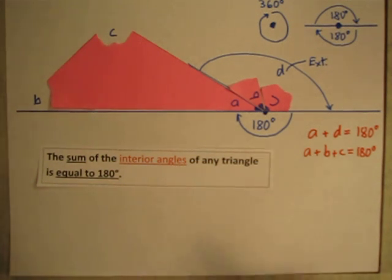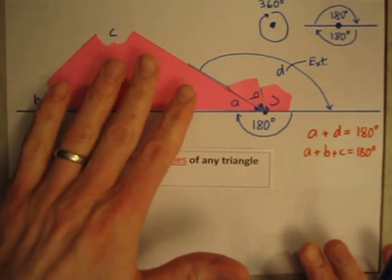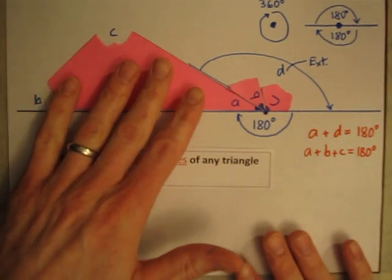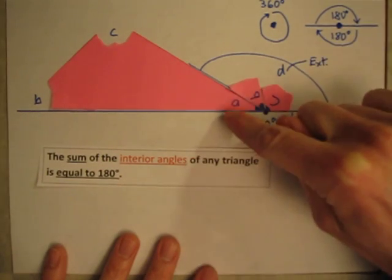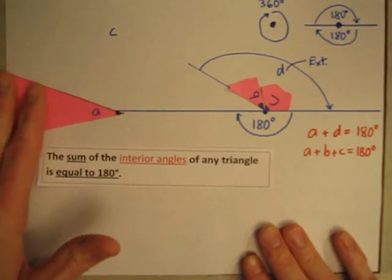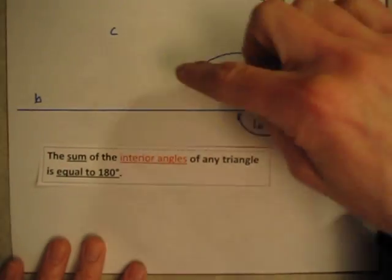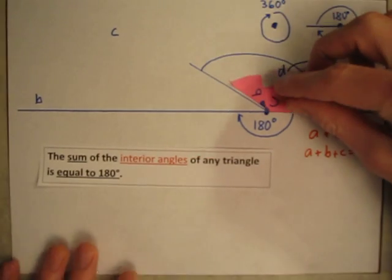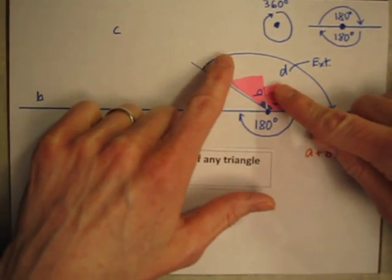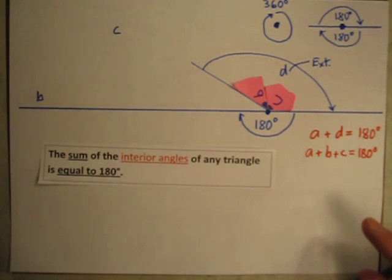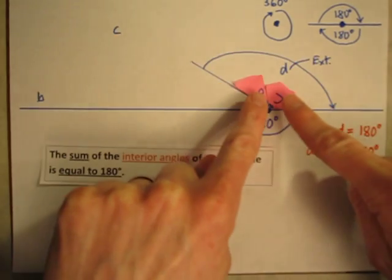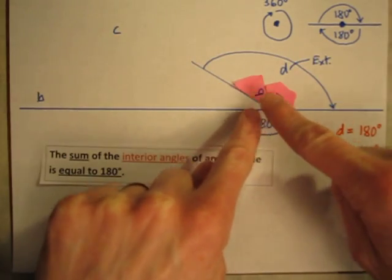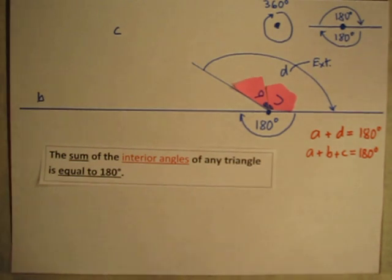There's one other thing we can look at related to exterior angles. Angle D was this exterior angle, adjacent to angle A. Notice that when I brought over angles B and C and put them over here, angles B and C are exactly equal to that exterior angle D. So these two interior angles, when added together, equal the exterior angle on the other side of the triangle.